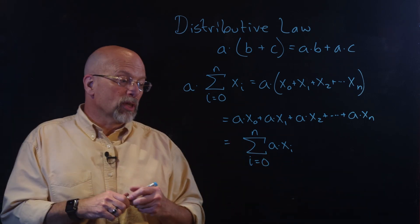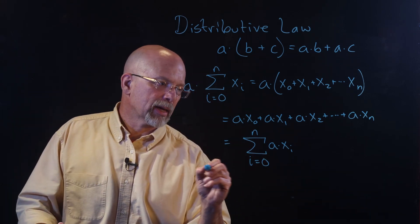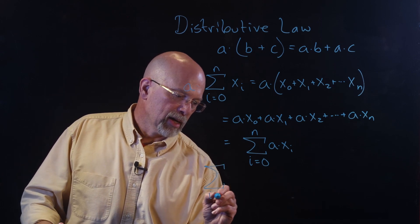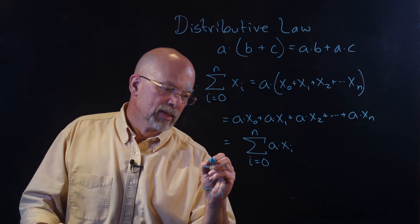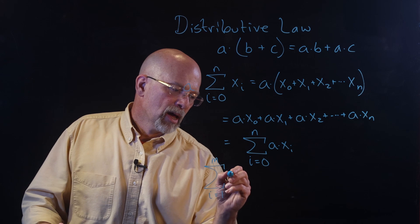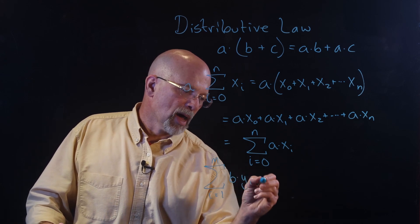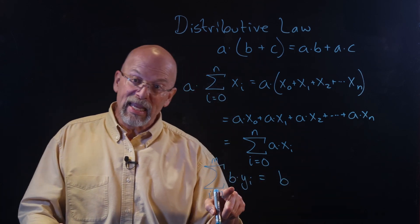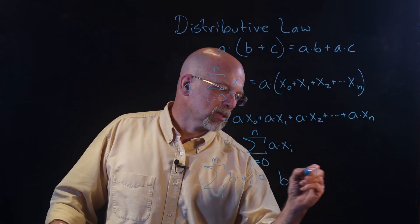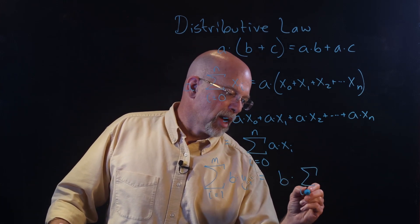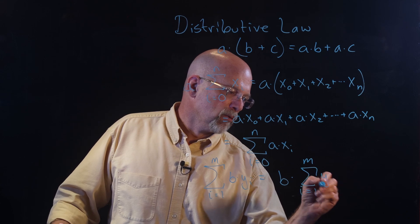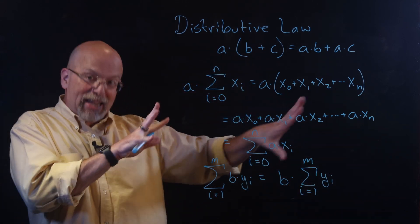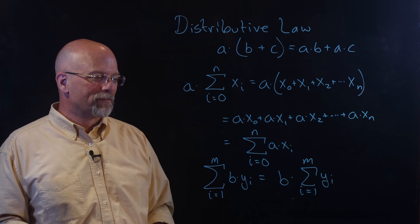And in fact, the same is true the other way. If I had something like the summation from i equals one to m of b times y sub i, that's equal to b — where b is a constant — times the summation from i equals one to m of y sub i. So you can pull it out, just like you can multiply it in.